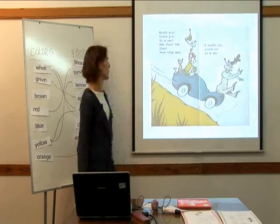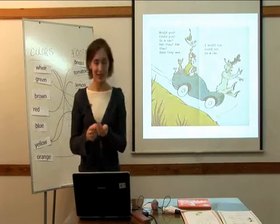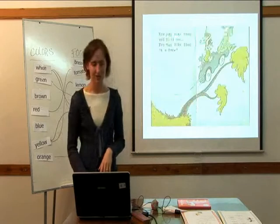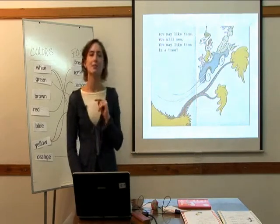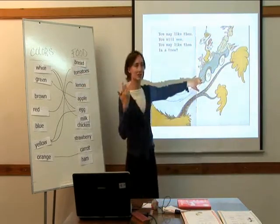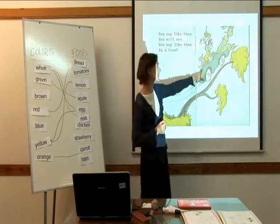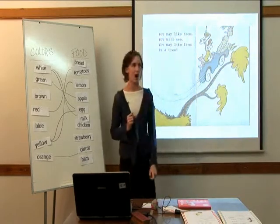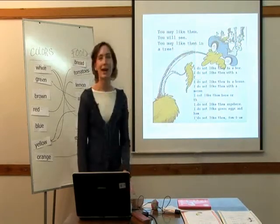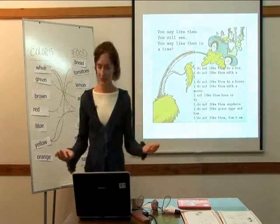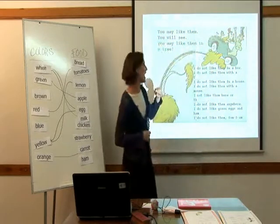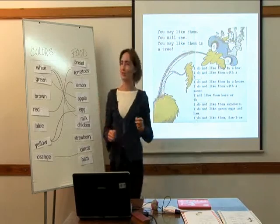'Would you, could you, in a car? Eat them, eat them — here they are.' 'I would not, could not, in a car.' 'You may like them, you will see. You may like them in a tree.' Here's our tree. And this is our car. What is this? Our mouse and the fox. 'You may like them, you will see. You may like them in a tree.' 'I do not like them in a box. I do not like them with a fox. I do not like them in a house. And I do not like them with a mouse.'